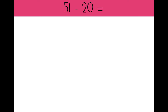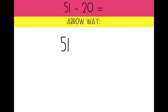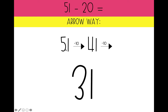Let's try 51 minus 20 using our arrow way. What number do we need to write down first? 51. How many tens are we taking away from 51? We are taking away two tens. 51 minus 10 equals 41. 41 minus 10 equals 31. We started with 51, took away one, two tens to make 20, and ended with 31. So 51 minus 20 equals 31.